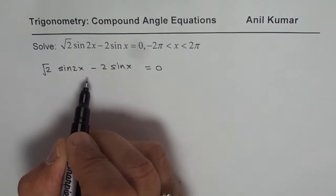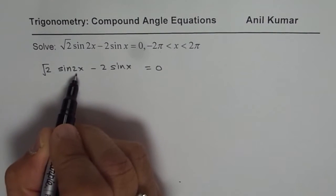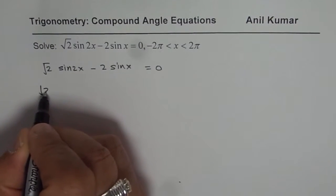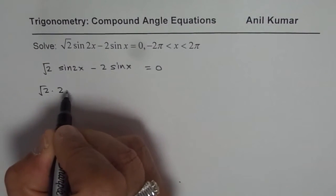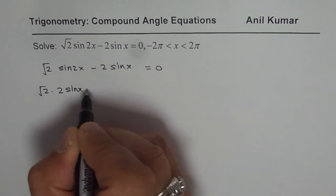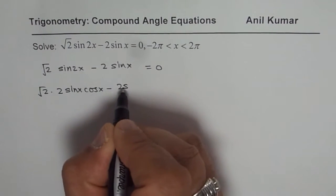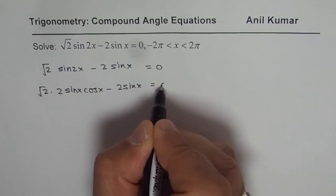What we can do is we can write sin 2x as 2 sin x cos x. So we get √2 times 2 sin x cos x - 2 sin x = 0.